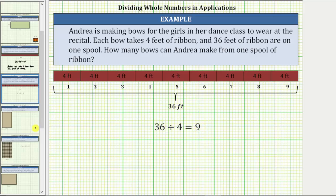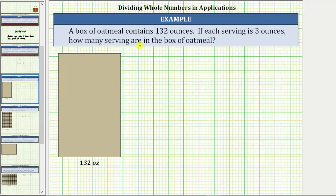Let's look at the second example. A box of oatmeal contains 132 ounces. If each serving is three ounces, how many servings are in the box of oatmeal?